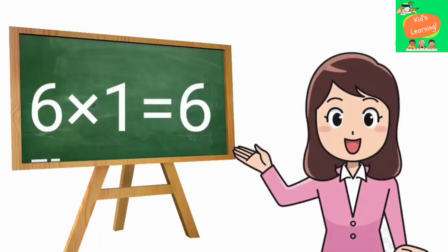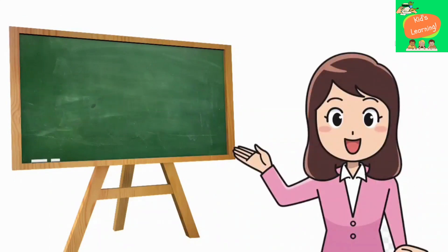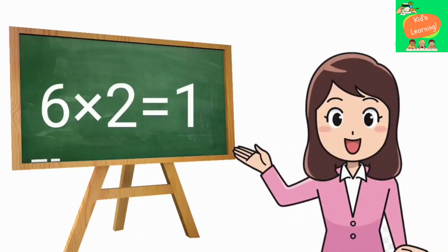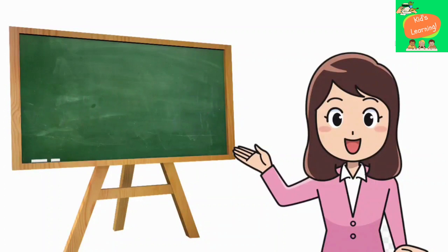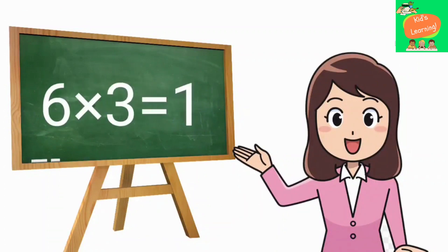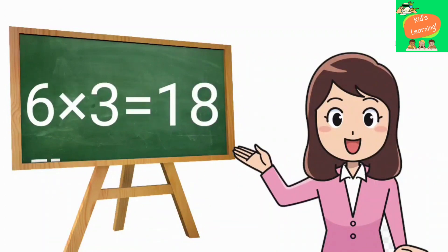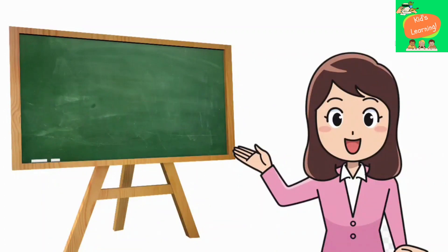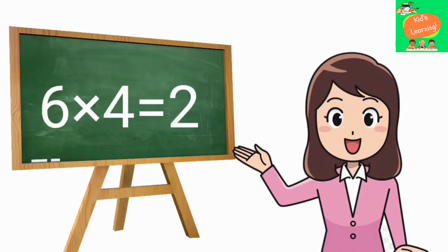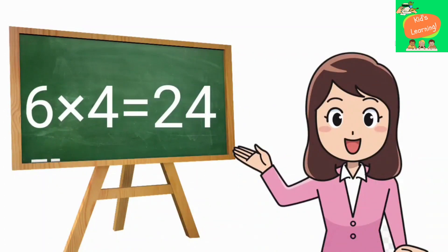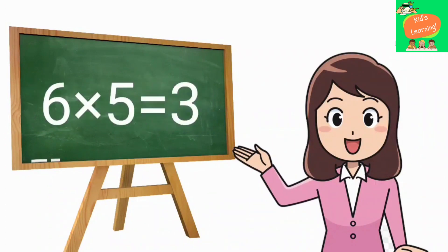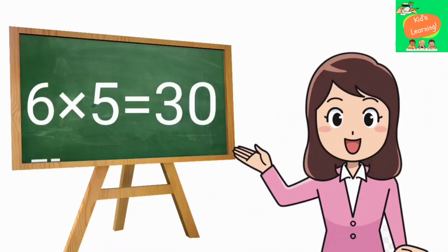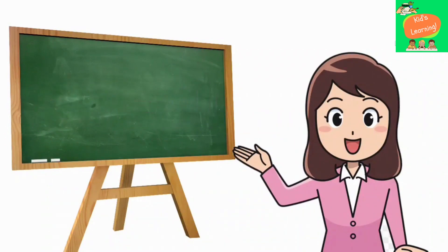6 1's are 6, 6 2's are 12, 6 3's are 18, 6 4's are 24, 6 5's are 30.